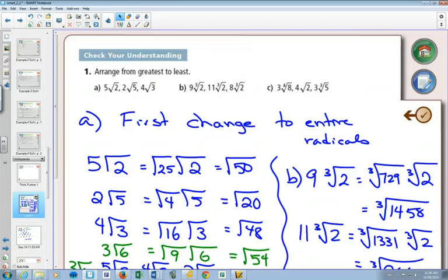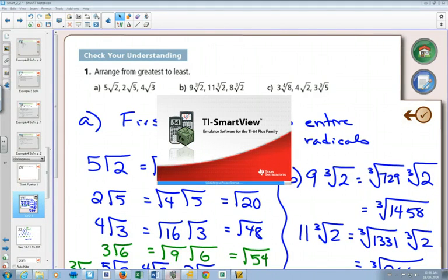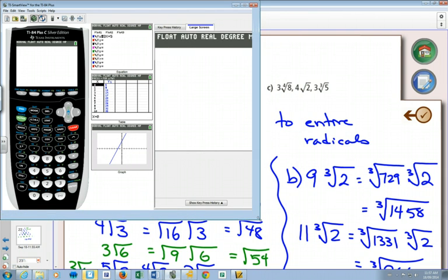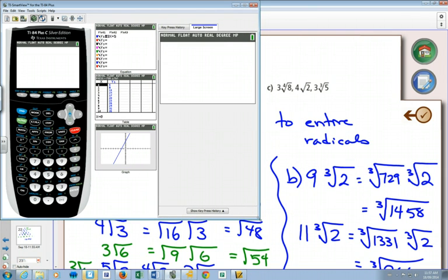Once we get to part C, now we're dealing with fourth roots, square roots, and cube roots. This one you would have to do with your calculator. So pull your calculator out because it's important to find out how you write in fourth roots, how you write in square roots and cube roots with our calculators.